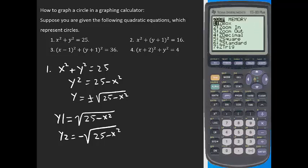You can go to Zoom 6 for the standard window. You'll see the upper half and then the lower half of the circle. Because of the scale it may look like an oval, but it is actually a circle. You can adjust your window to make it look more circular, but as long as we understand the equation represents a circle, that is okay.